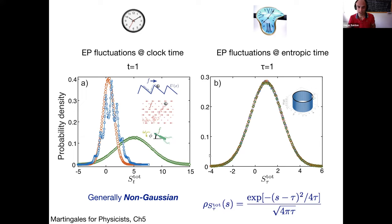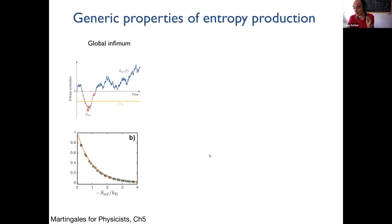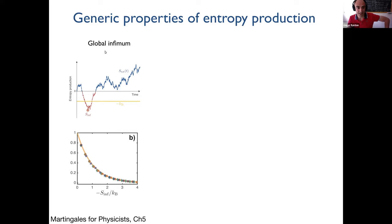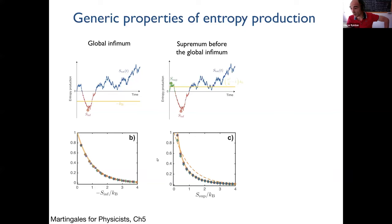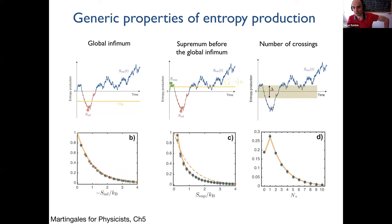The same property holds for housekeeping entropy production. This result tells you that all statistical properties independent of time contractions or dilations should be universal. For example, the global minimum of entropy production does not depend on when it happens, so it is time-scale invariant. The distribution of the infimum of entropy production is the same across different models — it is the distribution from the particle-in-a-ring model. There are infinitely many such universal properties: the supremum before the infimum, the number of times reproduction crosses an interval, etc.